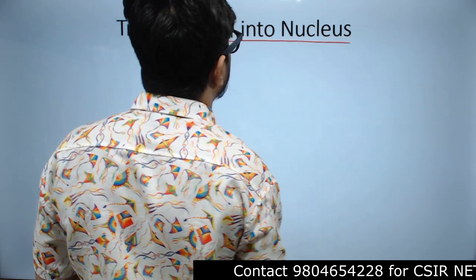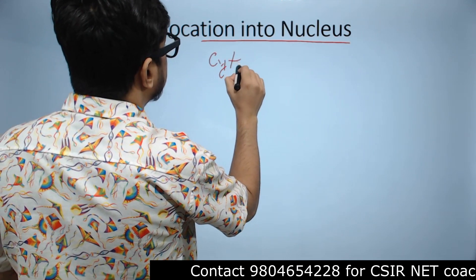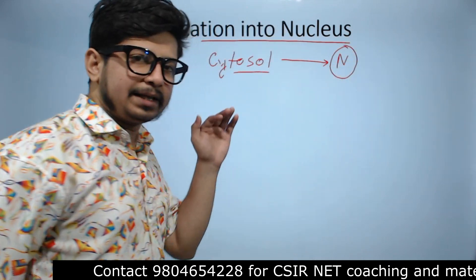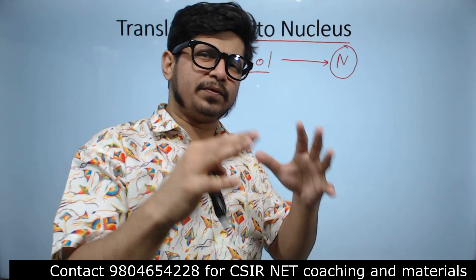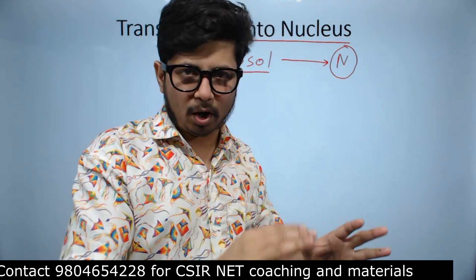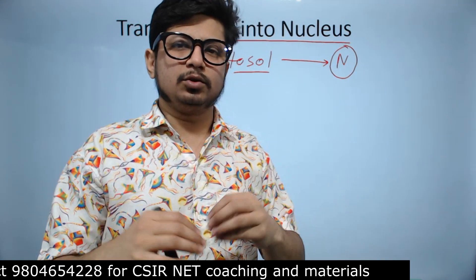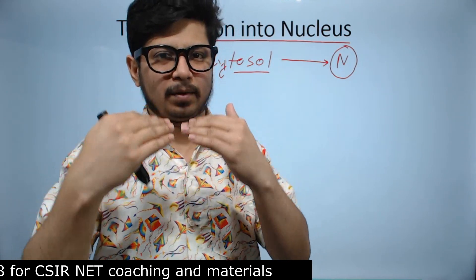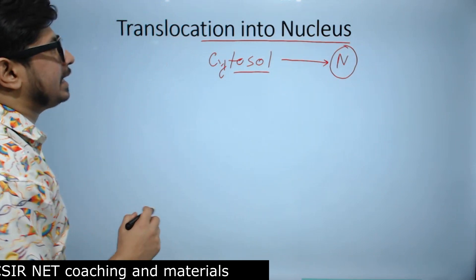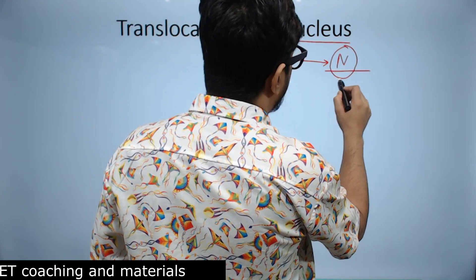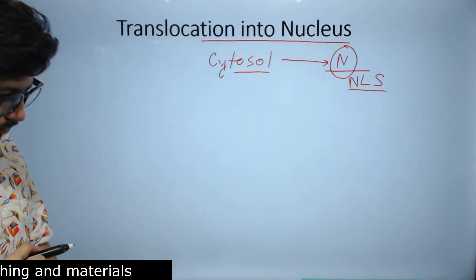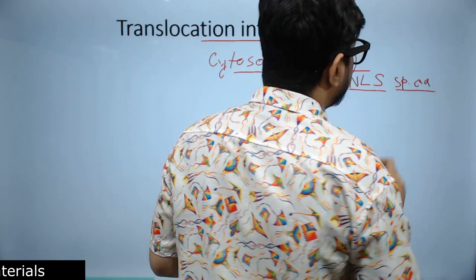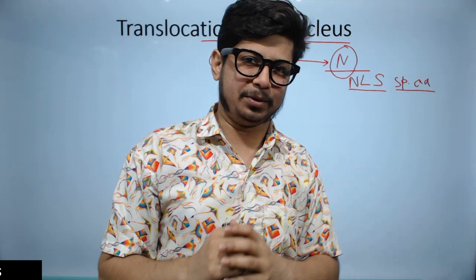The very first thing to remember about translocation into the nucleus is that proteins are synthesized in the cytosol and then delivered directly to the nucleus. We know that proteins destined to different organelles are synthesized in the cytosol and directly delivered to that organelle. Some other proteins, known as secretory proteins, are inserted after synthesis inside the ER lumen, packaged, transferred from ER to Golgi, then to the cell membrane. But in this case, a protein that needs to be transferred to the nucleus must carry a nuclear localization signal, or NLS — a specific amino acid sequence that acts as an address for the protein to be delivered inside the nucleus.